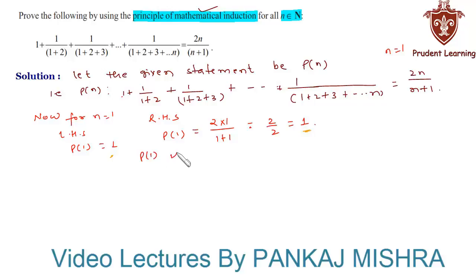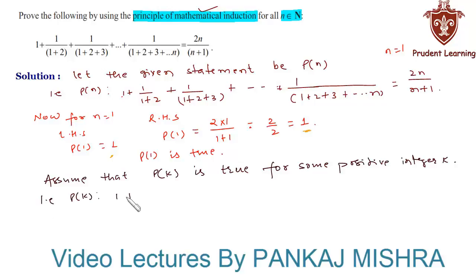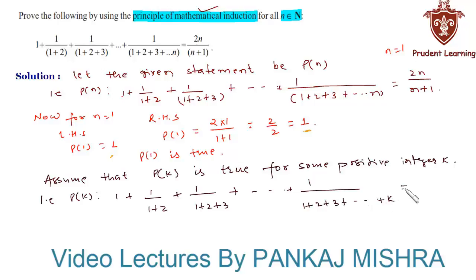Since LHS equals RHS, P(1) is true. Our second step is to assume that P(k) is true for some positive integer k. That is, 1 plus 1 upon (1 plus 2) plus 1 upon (1 plus 2 plus 3) up to 1 upon (1 plus 2 plus 3 up to k) equals 2k upon (k plus 1). Let's call this equation 1.